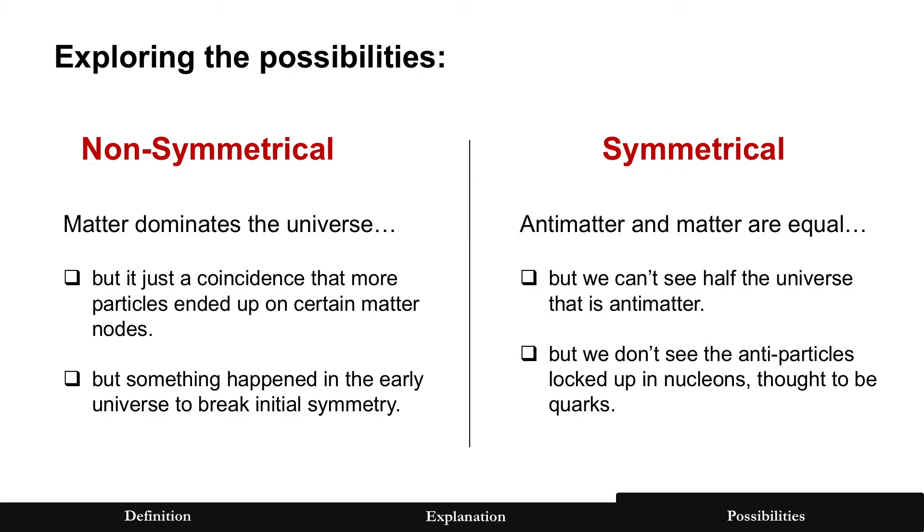Now, the two possibilities that I want to explore in a little bit more detail are what if it is symmetrical? And we just can't see it. Antimatter and matter are equal, but we can't see the other half of the universe that's antimatter. Or two, we actually don't see the antiparticles, but they're locked up in nucleons that surround us and we just don't know it. Alright, let's take a look at both of those.